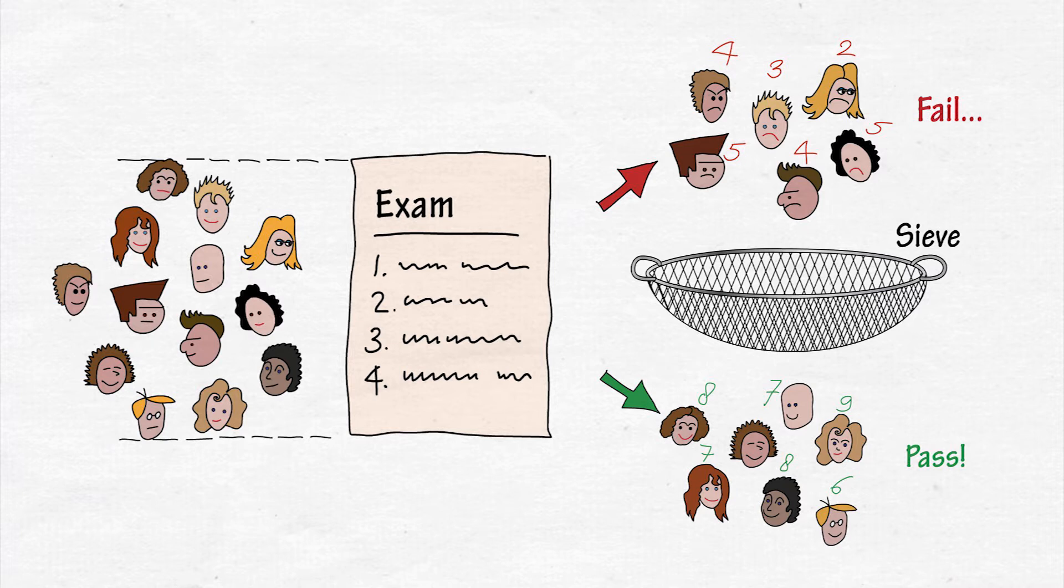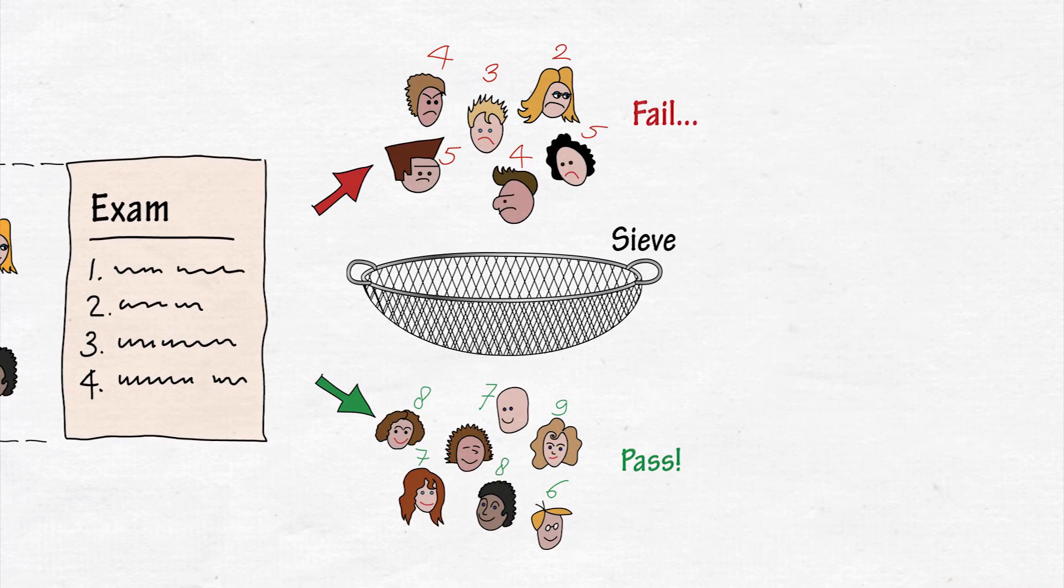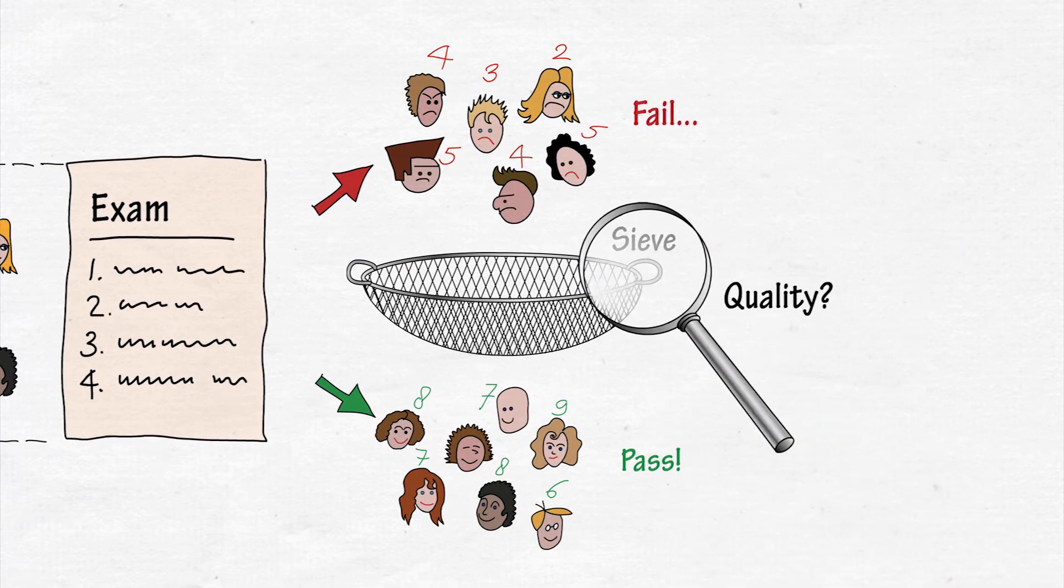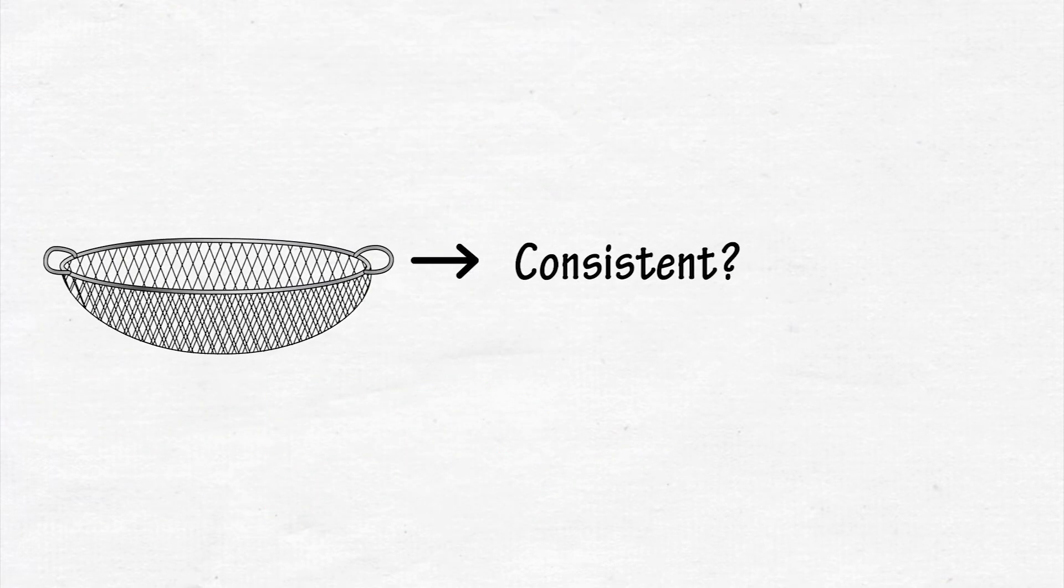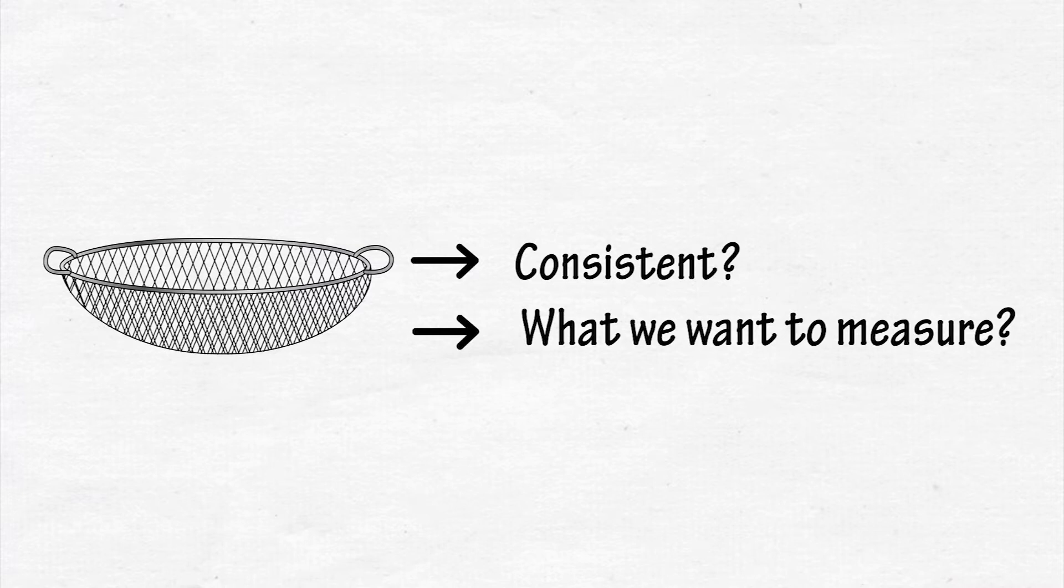It is important that the sieve functions well. You don't want students failing who should have passed or students passing who should have failed. So it is worthwhile investigating the quality of the sieve to see whether it works as you intended. Does it measure in a consistent way? And does it measure what we want it to measure? How does this work?